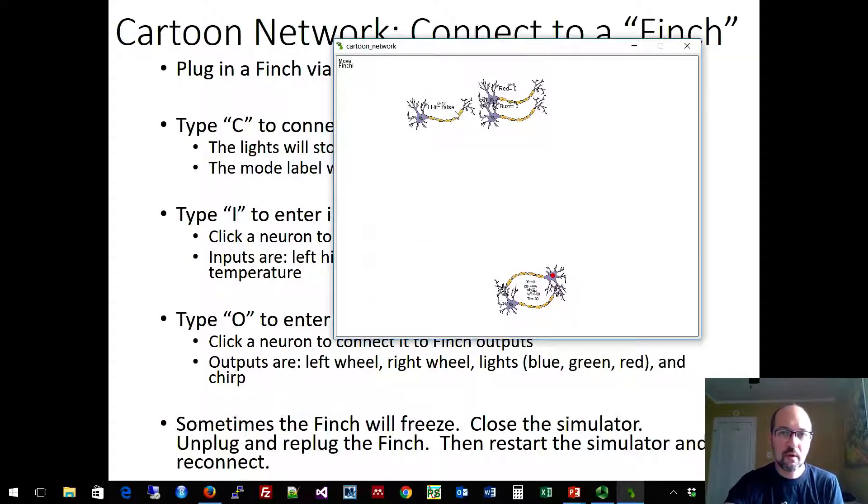And I'm going to move this neuron in place. And now, whenever I touch it, it will start to release transmitter. That will activate the motor neurons that create a buzzing noise and a red light. So we have a simple reflex circuit.